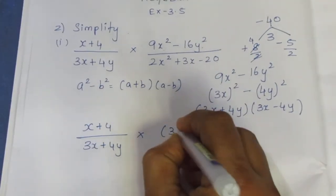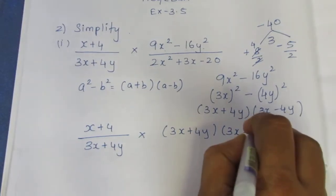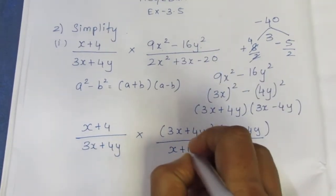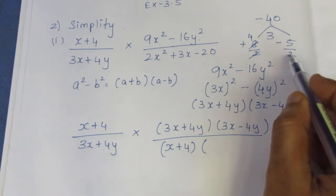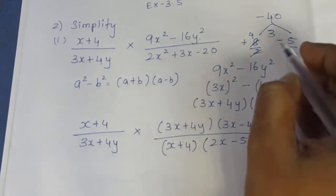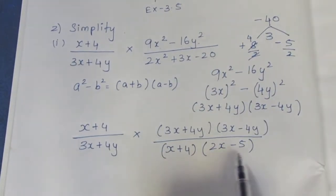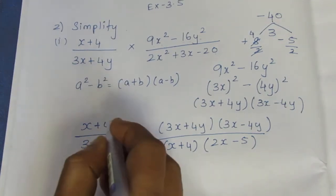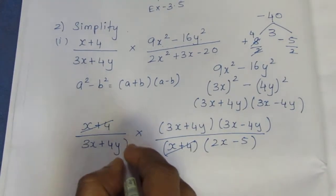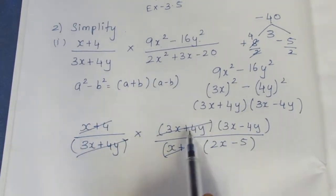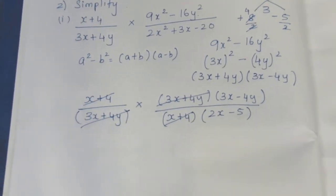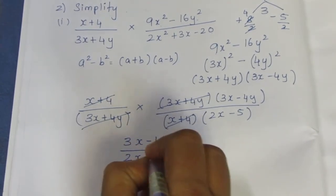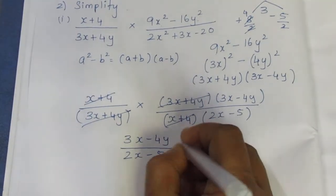Now we factorize. We get (3x minus 4y) by (3x minus 4y). Then (x minus 4) and (x minus 5) multiply, giving (2x minus 5). We cancel (x plus 4) and (x minus 4), and the balance answer for the first subdivision is (3x minus 4y) by (2x minus 5).